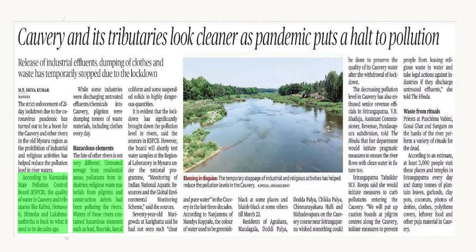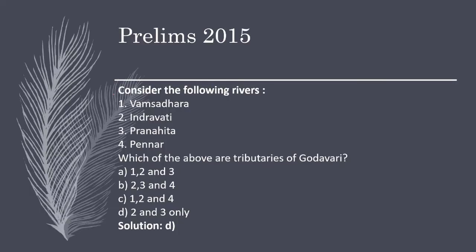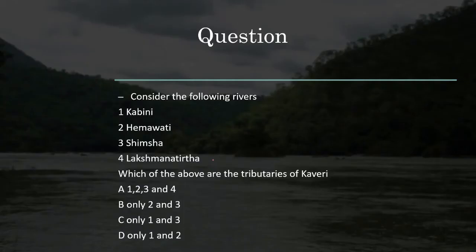In Prelims 2015, there is a question we will focus on. Consider the following rivers: Kabini, Hemavati, Shimsa, Lakshman Tirtha. Which of the above are tributaries of the Kaveri river? So Kabini, Hemavati, Shimsa, Lakshman Tirtha — these are the rivers listed.